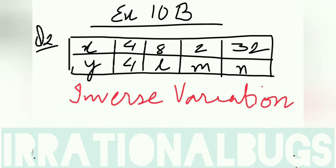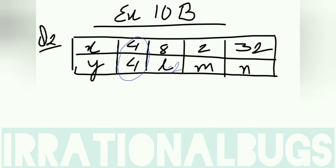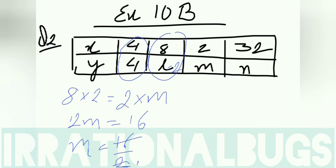So 4 into 4 is equal to 8 into l is equal to 2 into m is equal to 32 into n. First we start with 4 into 4 and 8 into l block. So 4 multiply 4 is equal to 8 multiply l. l is equal to 16 upon 8, that is 2. Next we start with 2 and 3, that is 8 into 2 is equal to 2 into m. 2m is equal to 16. m is equal to 16 upon 2, that is 8.